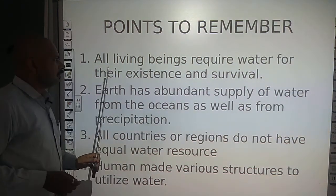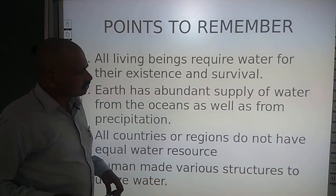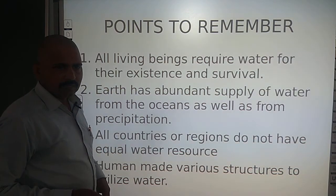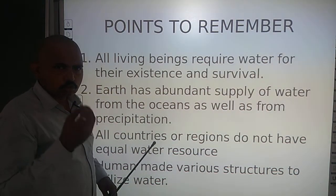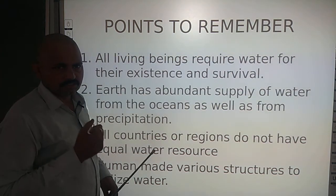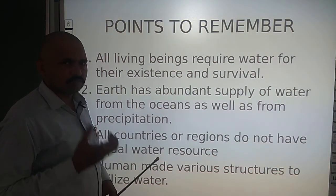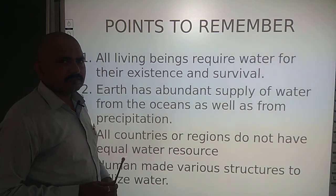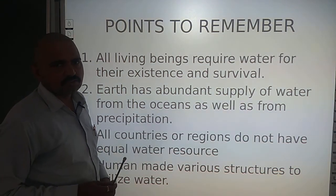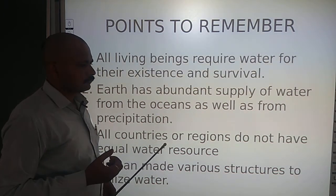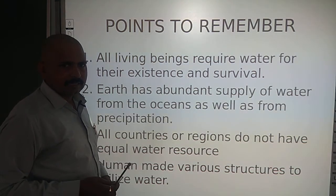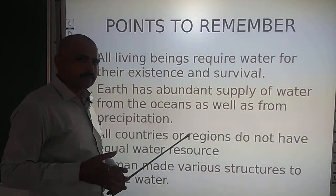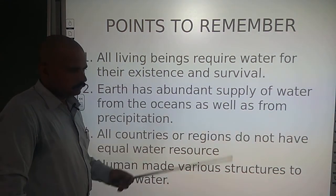The very first important point is that all living beings require water for their existence and survival. Even the human body consists of 70% water. If there is a deficiency of at least 2%, the person starts to feel thirst. At 5%, vision becomes blurred. Above 5%, there is a chance of fainting, and if it increases beyond 10%, the person could die.